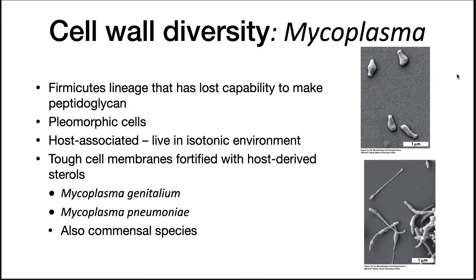Mycoplasma are a unique example. They lost their ability to make cell walls, and their cells are pleomorphic — meaning they have many shapes — due to this. These bacteria always live inside a host cell, and thus are in an isotonic environment that puts no pressure on their cytoplasmic membranes. They do have tougher membranes that are fortified with host-derived sterols. There are pathogenic species, such as Mycoplasma genitalium and Mycoplasma pneumoniae. Commensal harmless species are also common.